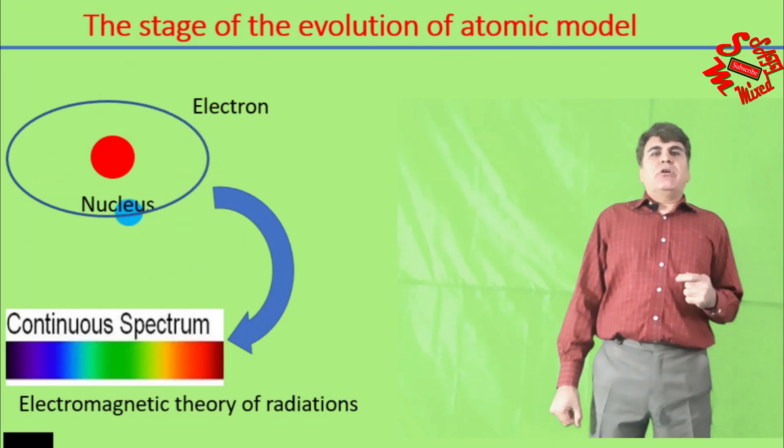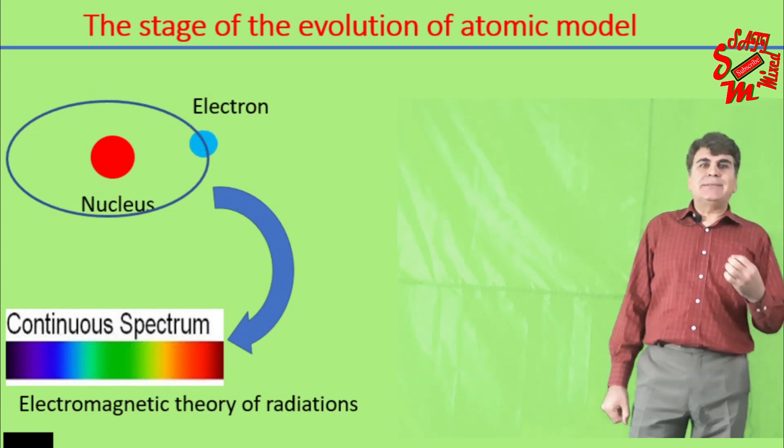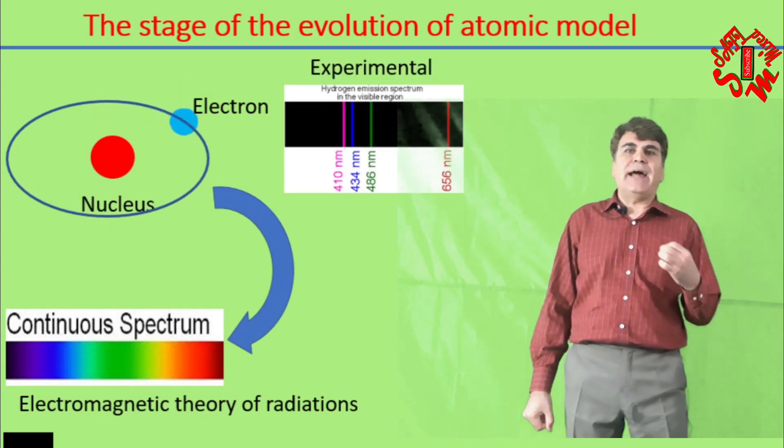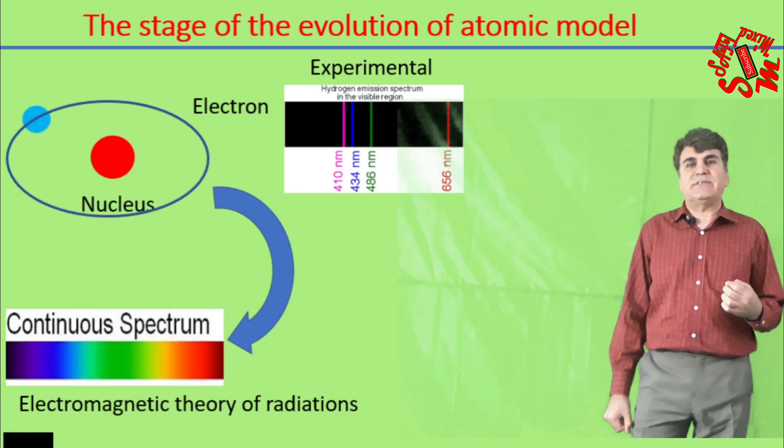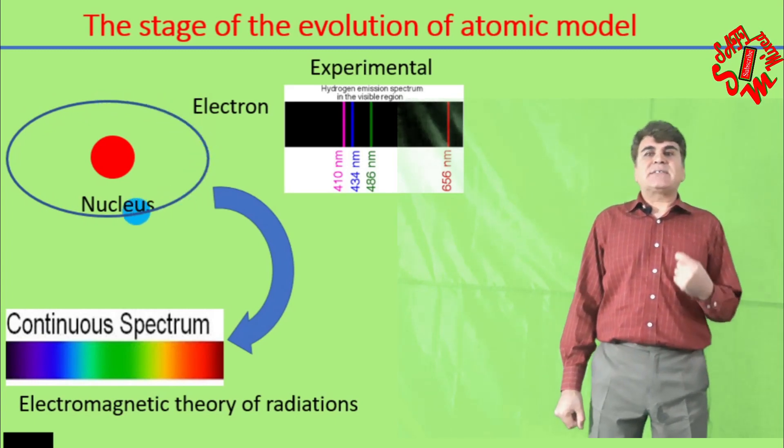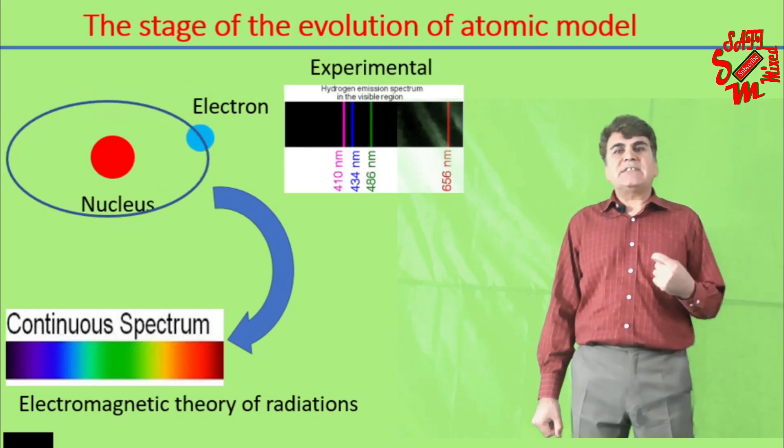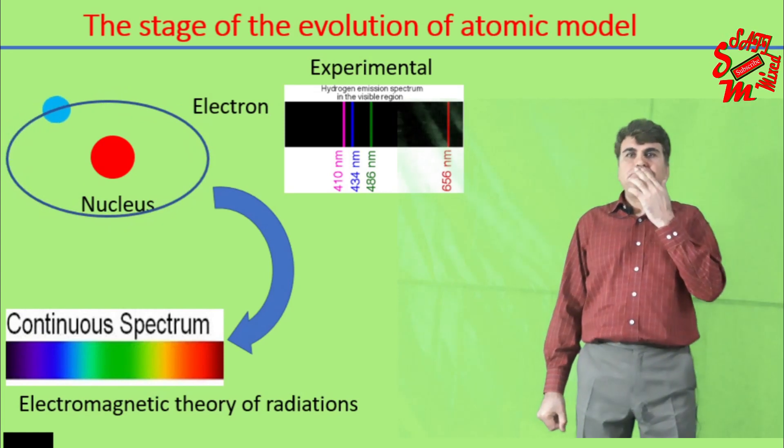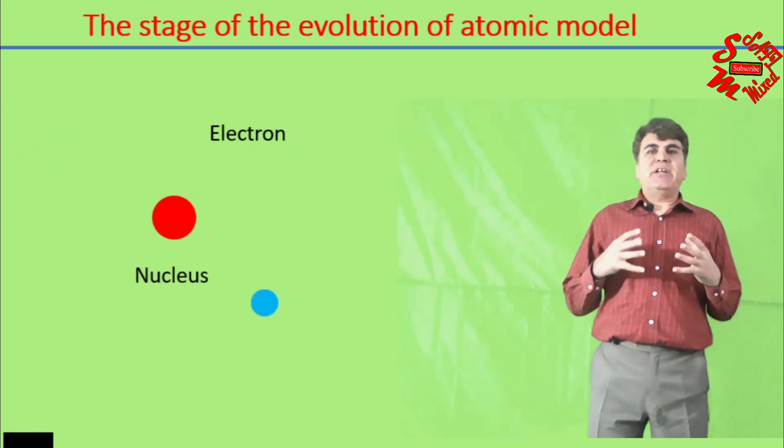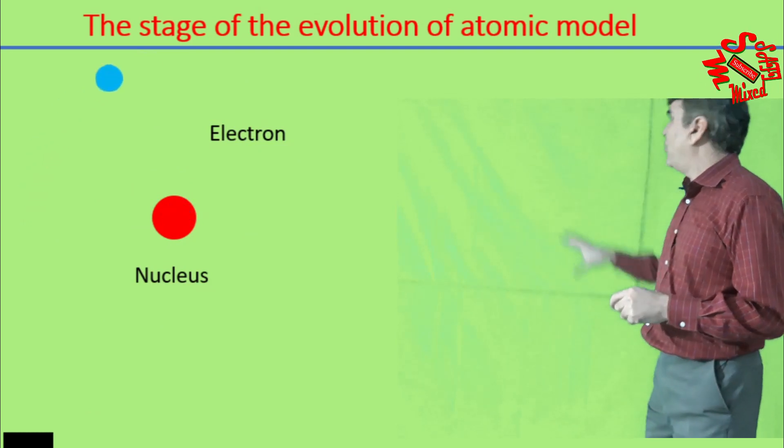The circulating electron in the model should radiate continuously, a speculation that was going against the then experimentally available data in the form of spectroscopically observed light spectrum from different gaseous materials. Secondly, the continuous emission of radiation by itself would lead to the collapse of electron motion and hence the instability of the atom, because at every moment the loss of energy in the form of electromagnetic radiation would cause the electron to spiral around the nucleus and finally fall down into it.